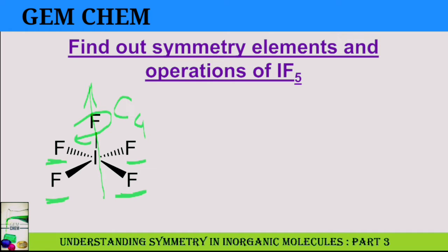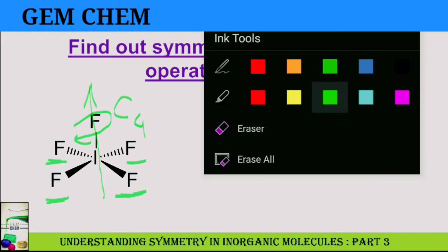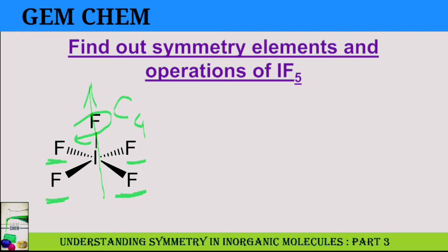Next we have sigma-V. One sigma-V passing from this F to this F, another sigma-V is passing from this F to this F.